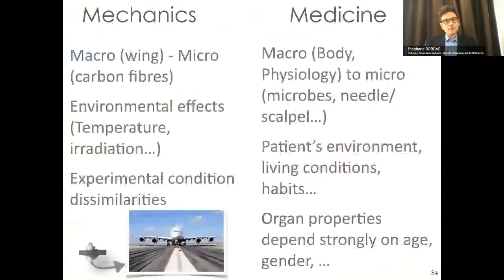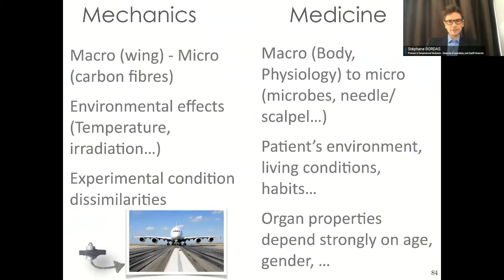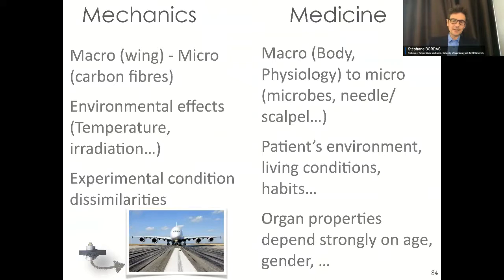So what are we going to talk about? As was said in the introduction, we've been working on the interface between mechanics and medicine. At the moment in our team there are about 30 people, and a lot of them are working in mechanics. About a third of them are applying their work to medicine, because we realized that mechanics can help us understand better what's going on in the human body. For example, we are currently working on the brain — we were yesterday writing a paper on how two-fluid porous media can represent the behavior of the brain under load.